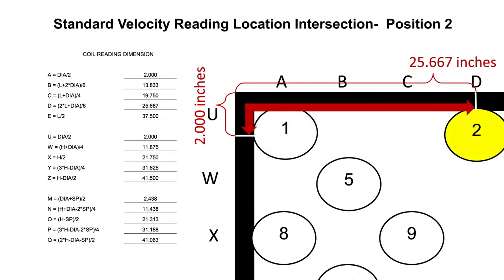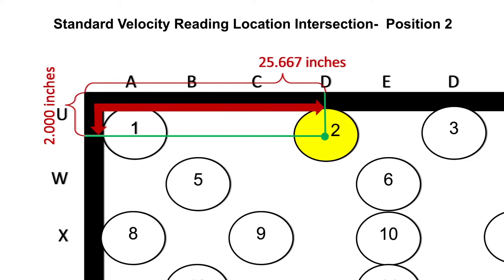The standard velocity reading location for position 2 is at the intersection of D and U. The value for D equals 25.667 inches and the value for U equals 2 inches. A measurement and marking for D is 25.667 inches from the left towards the center horizontally, and for U, 2 inches from the top towards the bottom. Therefore, the position 2 standard velocity reading location is at the intersection of D, 25.667 inches from the left to center, and U, 2 inches from top to bottom.